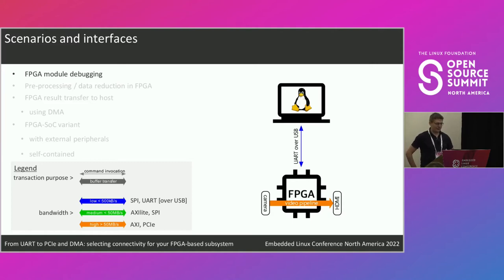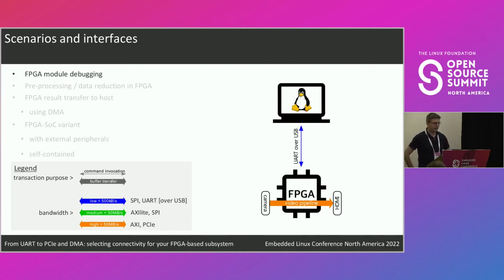On this slide I'll show a couple of scenarios, most of which I have come across, where you have communication between a Linux host and an FPGA-based subsystem. The legend is common for all: typically the purpose can either be invoking a command from the host on the FPGA and getting a reply, or shoveling data between the two systems — buffer transfers. In terms of bandwidth, you have different levels depending on the application, which you'll immediately see in the different scenarios.